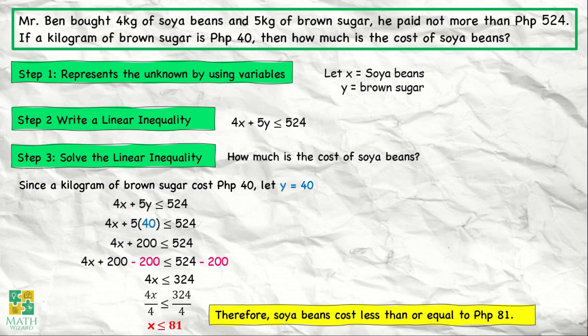Therefore, soya beans cost less than or equal to 81 pesos.